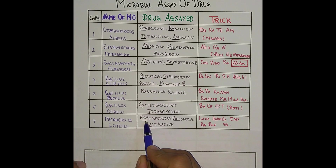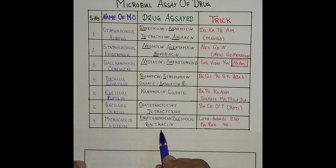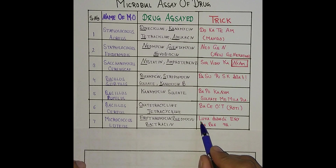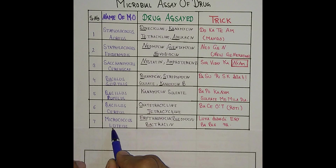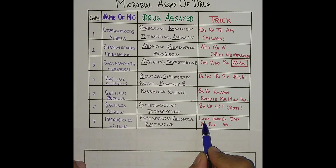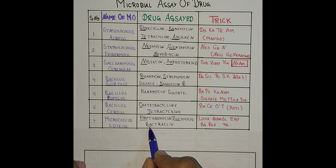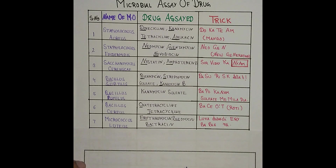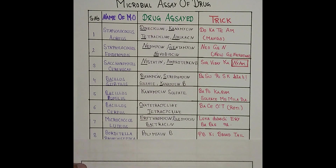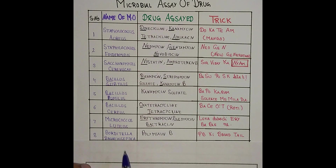The next one is Micrococcus luteus, and the drugs associated with this microorganism are Erythromycin, Bleomycin, and Bacitracin. The trick is 'Lutea dubodi aribablinae': LUTEA for Micrococcus luteus, ERYTH for Erythromycin, BU/BA for Bacitracin, and BLE for Bleomycin.